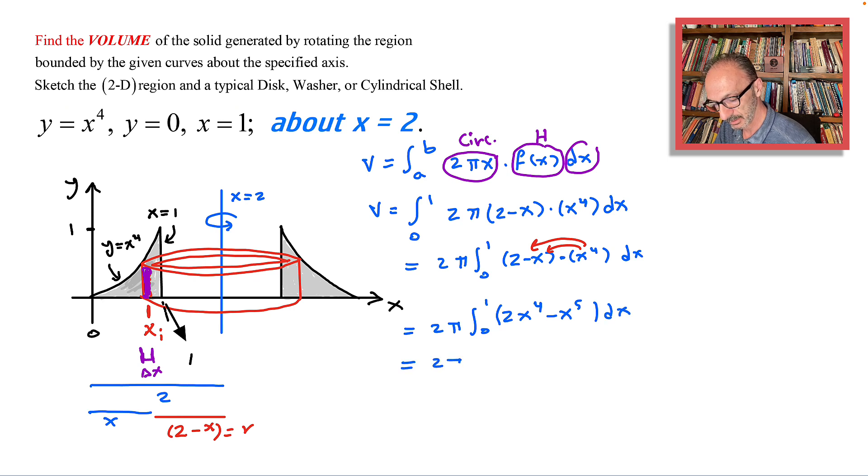2 pi times 2 x to the 5th over 5 minus x to the 6 over 6, from 0 to 1.